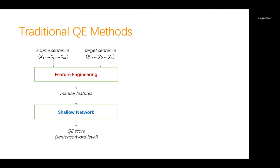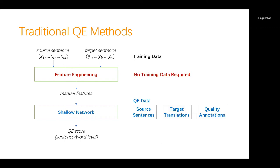Traditional studies on quality estimation are based on handcrafted features or feature selection. Given a pair of sentences, these features are extracted by some carefully designed rules and then passed into a shallow network for the final predictions of the QE score, at either sentence or word level. For the training data required for the traditional QE methods at the stage of feature engineering, no training data is required. And the QE predictor is trained by the QE data, composed of the source sentences, their corresponding translations, and the quality annotations, as shown in the previous slide.